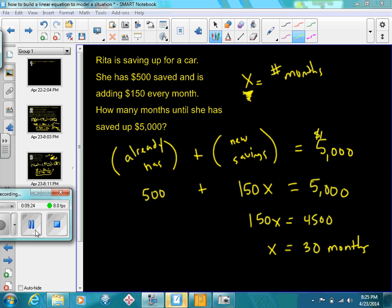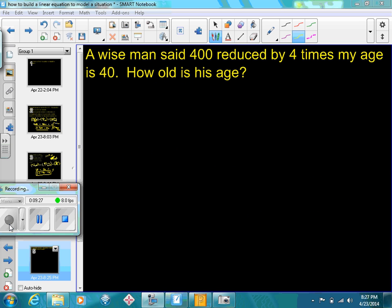So it would take her 30 months to save up to $5,000. Every problem's a little bit different. Sometimes you'll just get a riddle for a story problem, and you'll need to come up with an equation to solve it. Once you get the hang of it, it's not as difficult, but it does take practice. So let's take a look at this: a wise man said, 400 reduced by four times my age is 40. How old is this man? This particular type of problem is literally trying to show you what you can do. So let's read it slowly. 400—so let's write down 400. Reduced by—that's just talking about subtraction. Reduced by what? Four. So let's write down 4 times—that means multiplication. Four times my age.